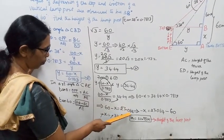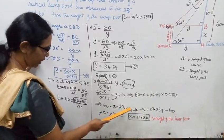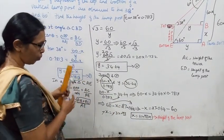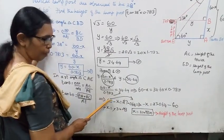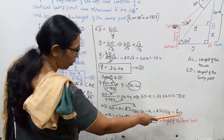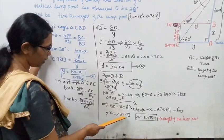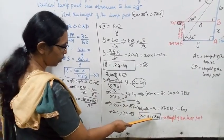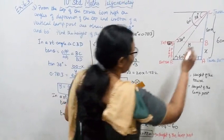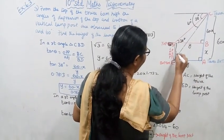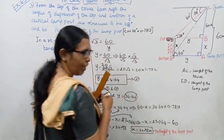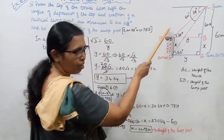So 60 minus X equals 27.064. Moving X to one side: subtract — 60 minus 27.064 gives us X. The biggest number sign means X equals 60 minus 27.064, so X equals 32.93 meters. That is the value of X, which represents EB, the height of the lamp post.